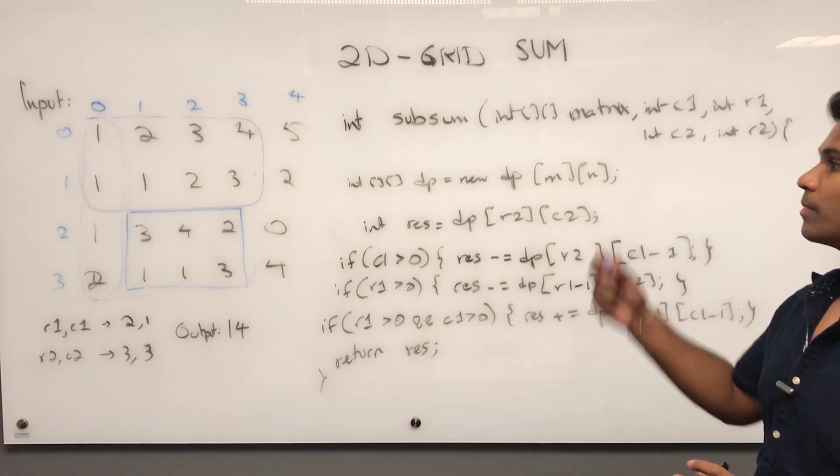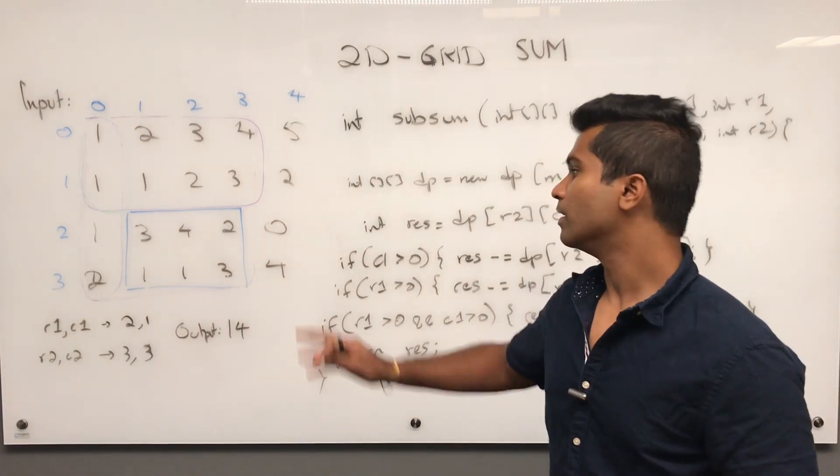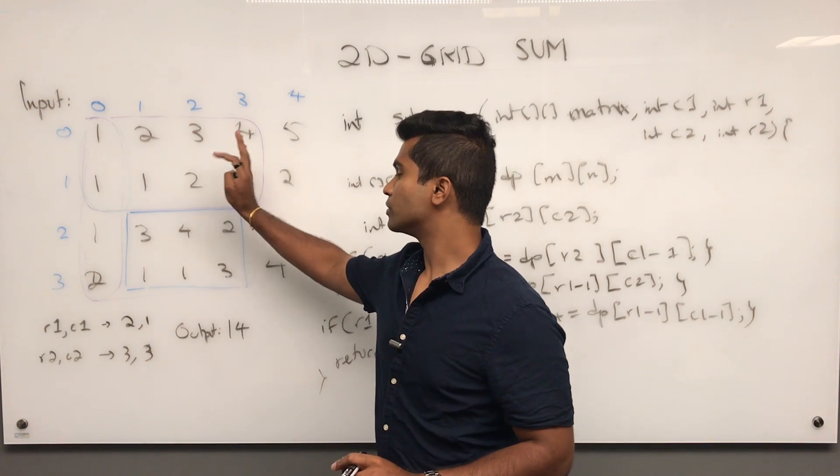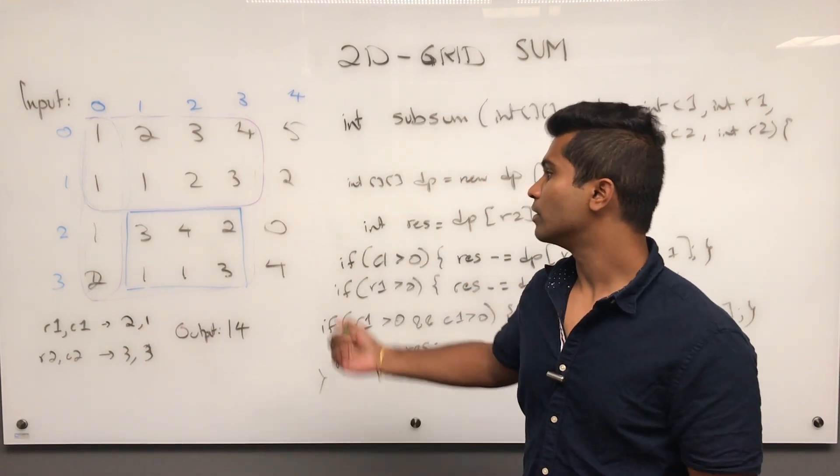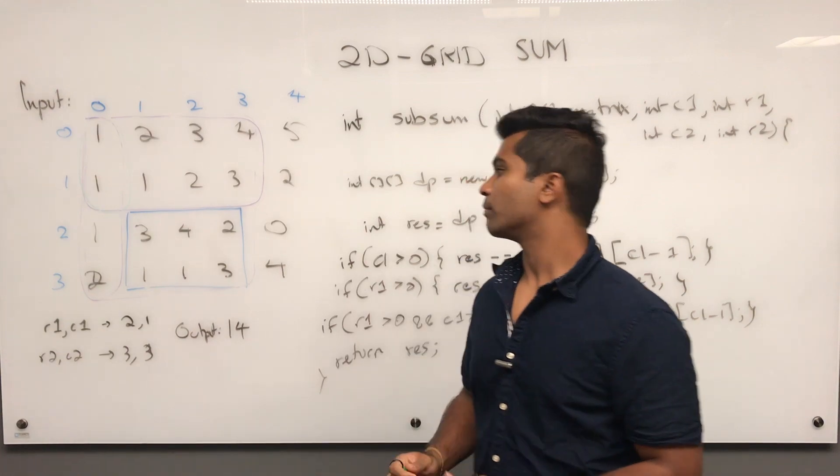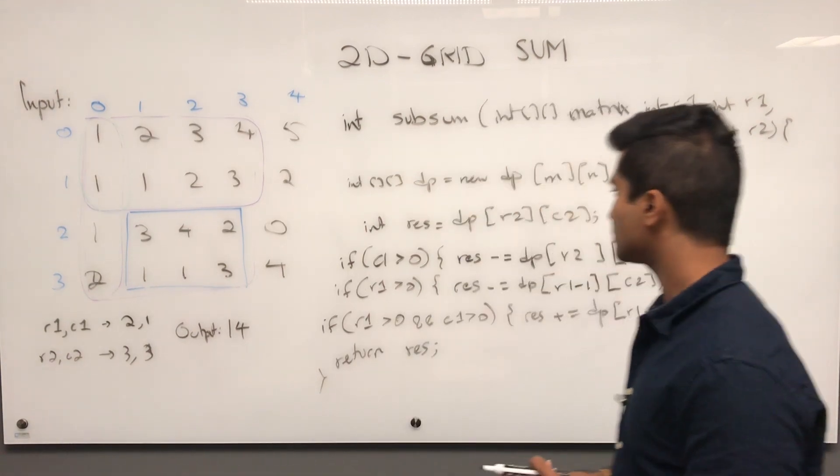So the runtime complexity of this is going to be the rows times the column, because we have to check every single one to populate the DP array.